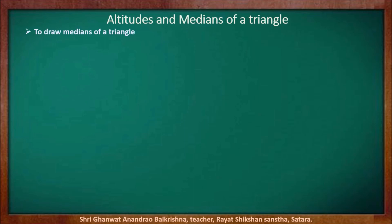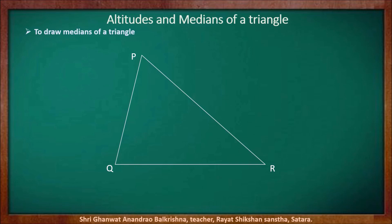Now we are going to draw all three medians of a given triangle. So let us draw triangle PQR. We have to find all three medians. For that, we have to find the midpoint of each side. First, we will draw a perpendicular bisector of segment QR. The point of intersection, point L, is the midpoint of segment QR. So join vertex P and midpoint L — segment PL is the first median.